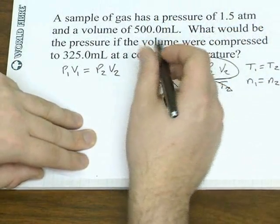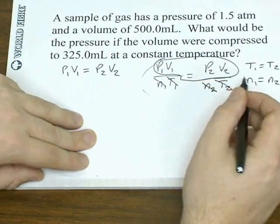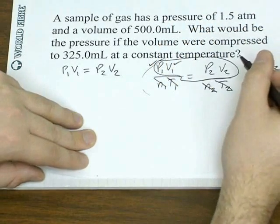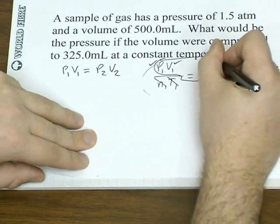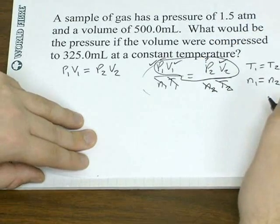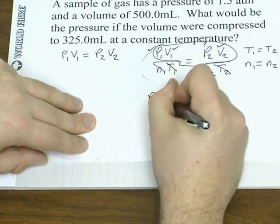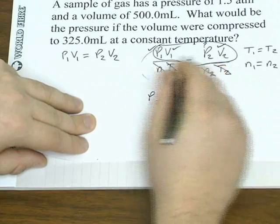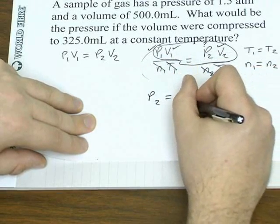So again, you compare what you're given to the equation you think you need. We're given a pressure and a volume. We're given another volume and we want to find the pressure for that volume. Just like before, we have three of the four variables so we can solve for the fourth.